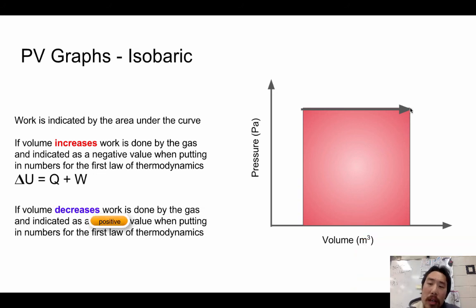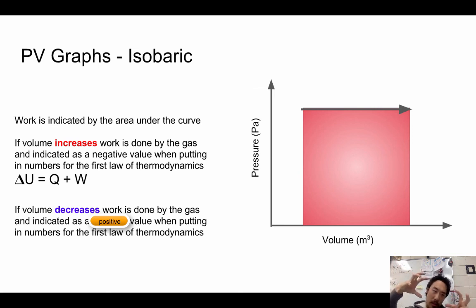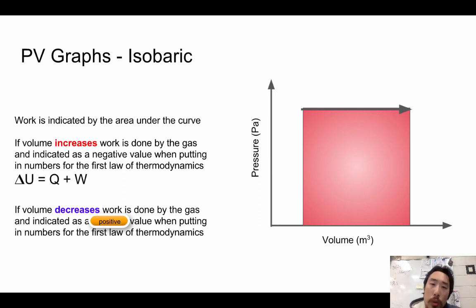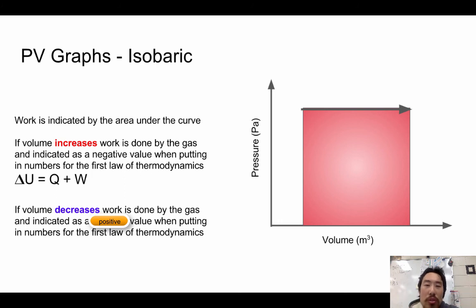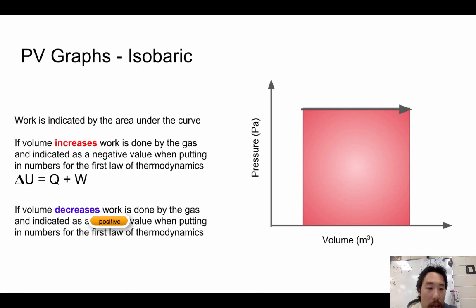If the arrowhead is going to the left, something is decreasing the volume the gas can occupy — going against what gases naturally want to do, since gases want to constantly expand. In order to force the gas into a smaller area, you do work to it, and so the work value is put in as a positive.